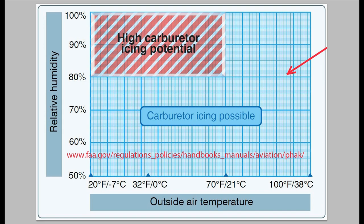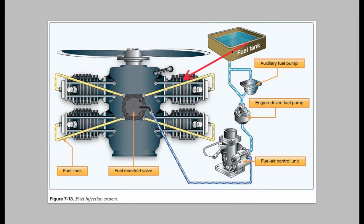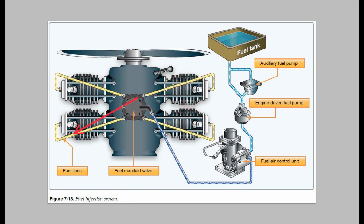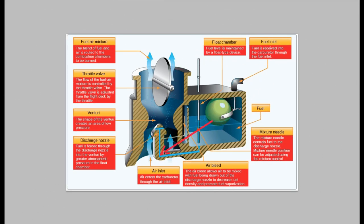The Cessna 172N has a four-cylinder carbureted engine. I'm sorry this is a fuel-injected picture, but just imagine the carburetor sitting right here with an intake manifold going to each cylinder. This is a cutaway of an updraft carburetor similar to the one found on the Cessna 172N. Air is drawn in through the air inlet, goes through the restricted area — the venturi — where fuel is drawn into the carburetor, and from there it travels through the intake manifold to each individual cylinder.